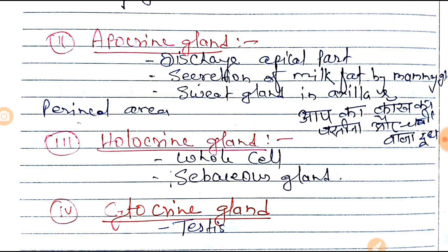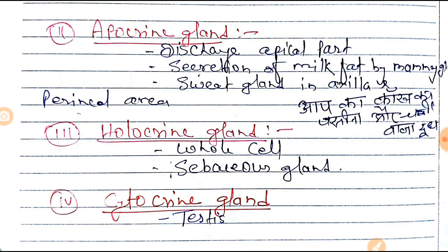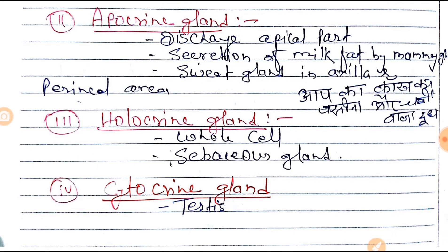The trick for apocrine gland: 'apic' stands for axilla — meaning sweat gland in the axilla — and 'fat' stands for the milk fat of the mammary gland. So you can easily appreciate it with this trick.